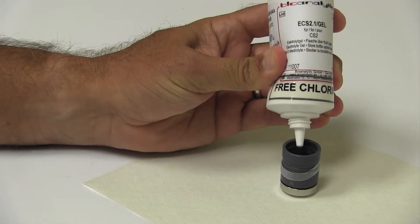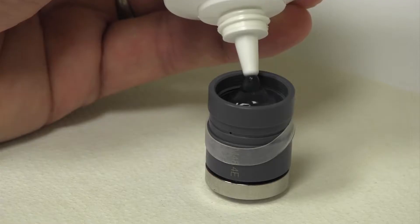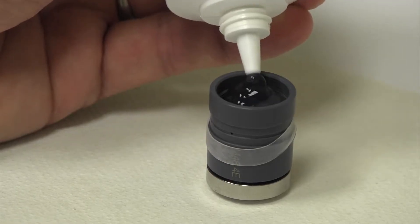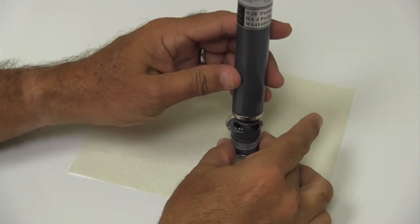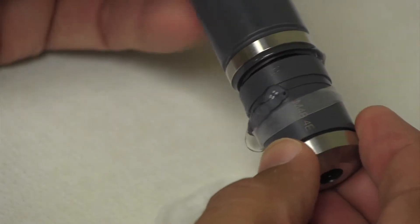Slowly fill the membrane cap to the edge with electrolyte gel, not allowing any air bubbles to form. Hold the probe body upright while inserting it slowly into the membrane cap, and screw the cap onto the probe.